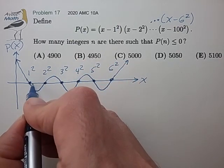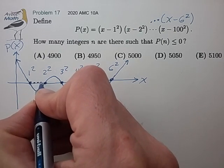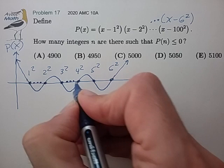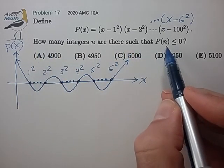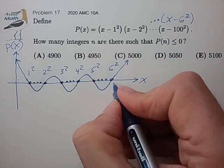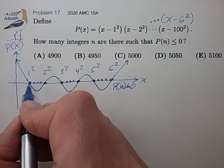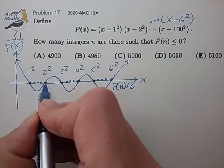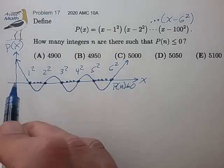And it looks like between the zeros, we have some integer points. And the problem is asking us to count up the number of integer points that are less than or equal to 0. Okay, so it sounds like I need to count up these points plus these points plus these points. So let's see if we can do that.